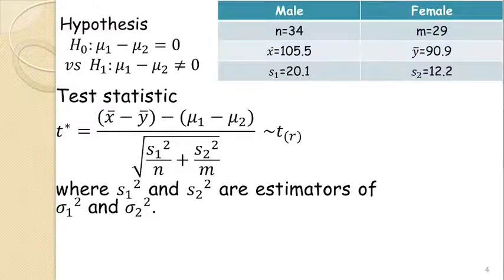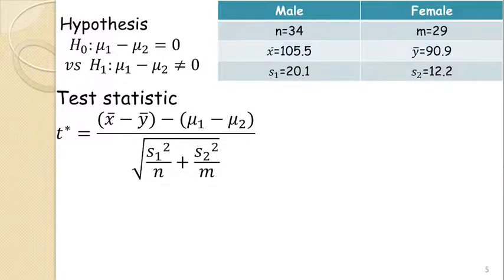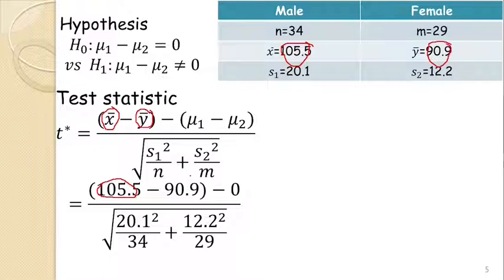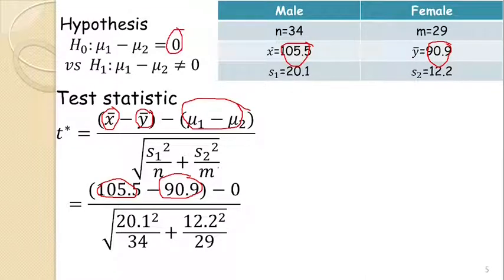Now we compute the test statistic. The value of x̄ is 105.5, which we place here. The value of ȳ is 90.9, which we also place here. Under the null hypothesis, μ₁ − μ₂ = 0, so we replace it with 0 when computing the test statistic.